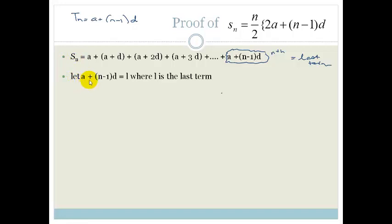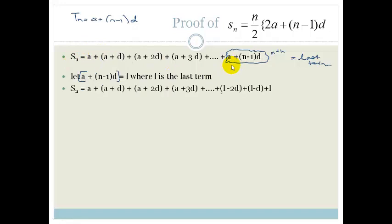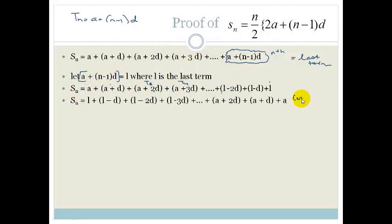So we're going to let A plus (n minus 1)D equal L, where L is the last term, just to make things easier. If we rewrite this, Sn equals A, plus (A plus D), plus (A plus 2D), plus (A plus 3D)... and working backwards from the end, you have L, then L minus D (the second last term), then L minus 2D (the third last term). Here we are subtracting our common differences, whereas at the start we are adding them. Now what we do is write the series backwards — there is a reason for this.